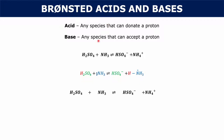Whenever an acid gives off a proton, you have that acid turning into a base — the acid and the conjugate base are hand in hand. Whenever a hydrogen is taken from an acid, you produce a base called the conjugate base. On the other hand, when you have ammonia and you add a hydrogen to it, you get an acid called the conjugate acid, which is the ammonium ion.